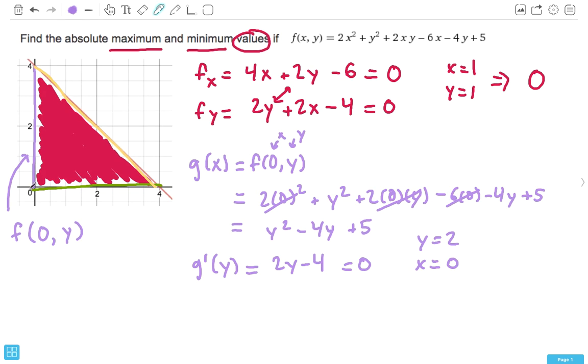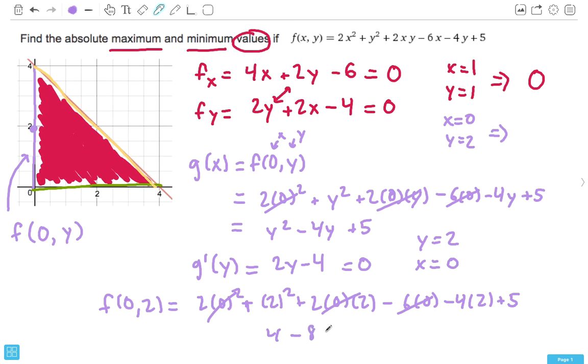So, at 0, 2, we have another critical point. So, what we do, let's put it up here. x equals 0, y equals 2. We're going to plug that back into our original equation. f of 0, 2. And we end up with that equaling 1.